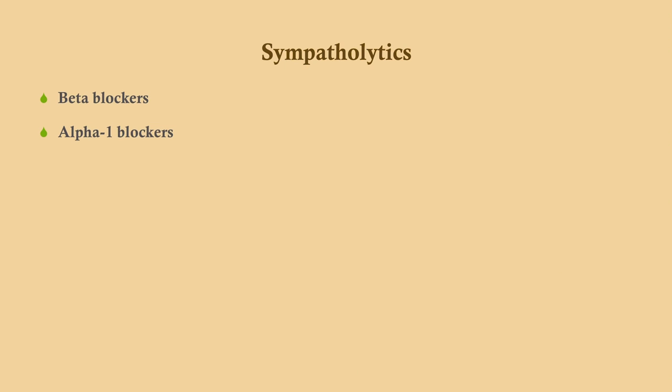So we're going to start with the sympatholytics here. Remember in the previous video, which you should have already watched, I talked about diuretics and I talked about the RAS inhibiting agents — ACE inhibitors and ARBs and so forth. That is in video one. Go back and watch that if you haven't already. So we're going to talk about sympatholytics to start out here, and we're going to talk about the beta blockers and alpha-1 blockers.